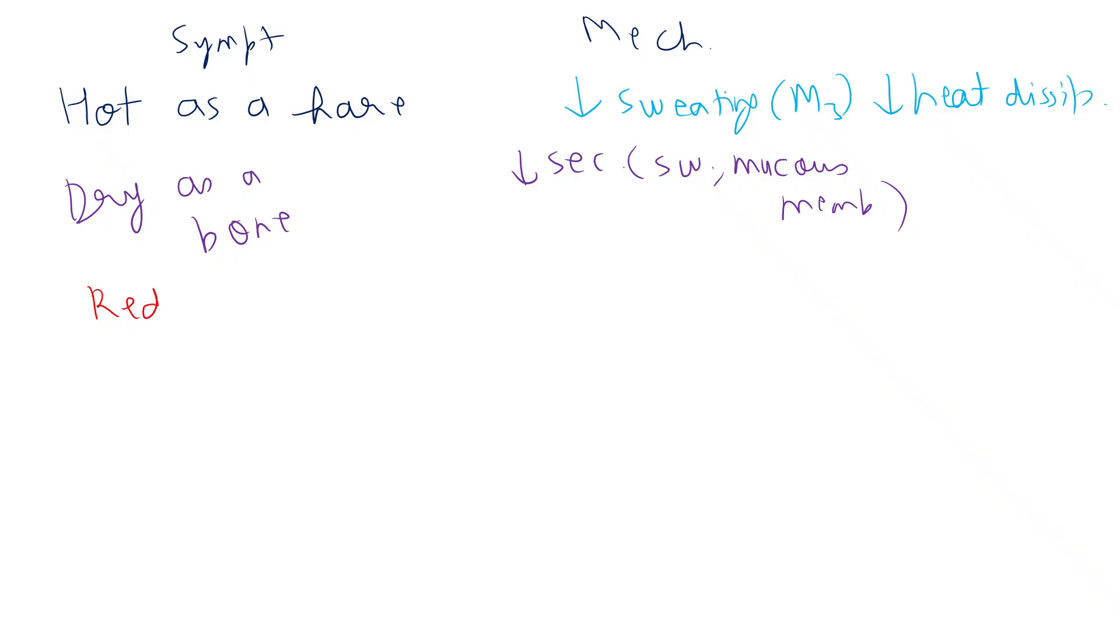Red as a beet - flushed skin occurs due to superficial vasodilation due to increased body heat.